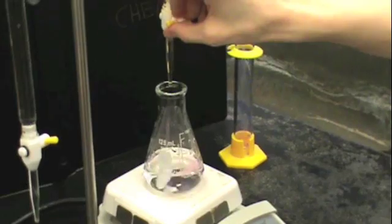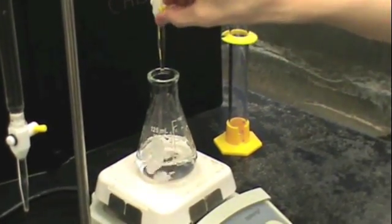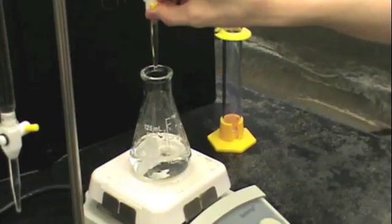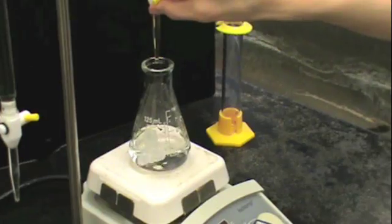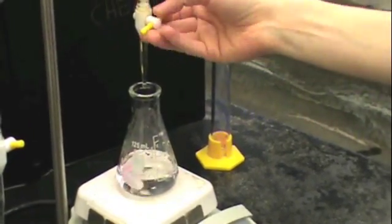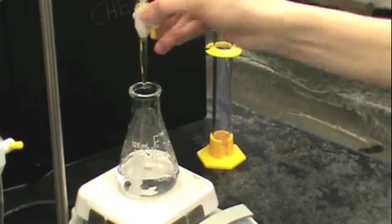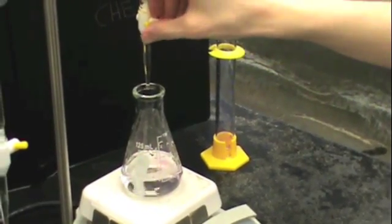Once you're pretty close to your endpoint, you'll see that the pink color persists for a couple of seconds. That's when you'll want to go very slowly. You'll see that Tanya is demonstrating the quick turn method that lets you add just one drop at a time.